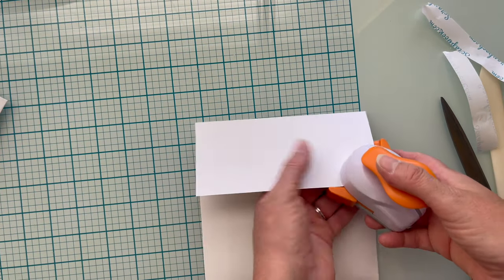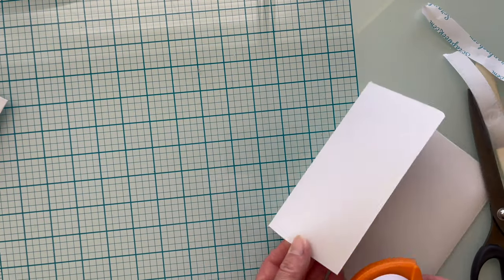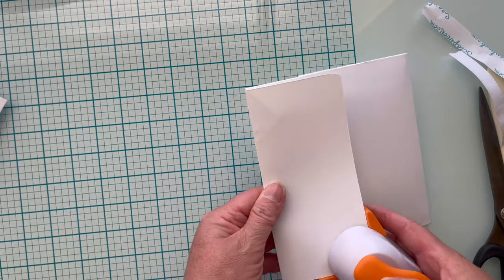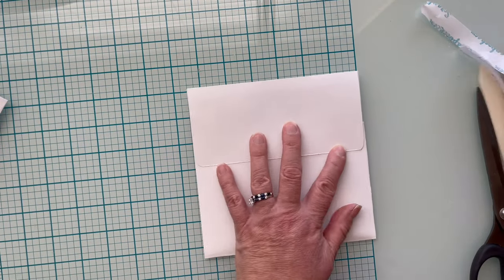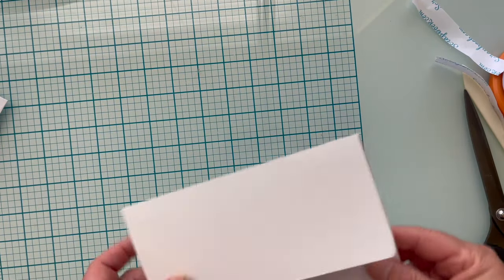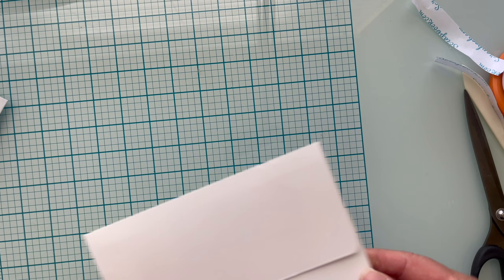Now a little finisher. Not necessary but certainly you can is I used a corner rounder and we're done. A beautiful six by six envelope.